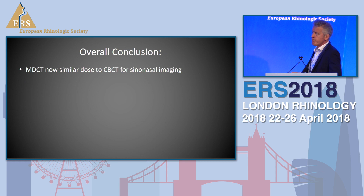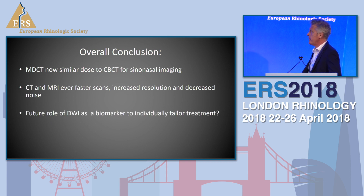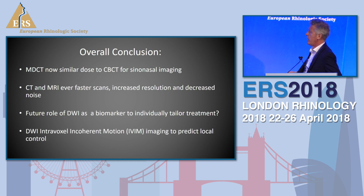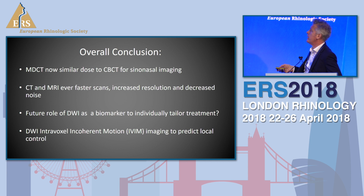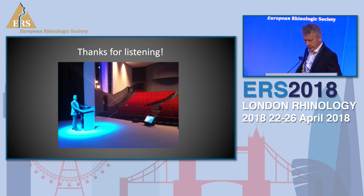Overall conclusion: multi-detector CT is similar to cone beam in dose for sinonasal imaging. CT and MRI are ever faster, with increased resolution and decreased noise. I think there's a future role for diffusion-weighted imaging as a biomarker, maybe to individually tailor treatment. And using diffusion-weighted with more B-values - intravoxel incoherent motion - you can predict local control. I'd also like to plug our meeting in September in London: the European Society of Head and Neck Radiology at the Royal Geographical Society. Thank you for listening.